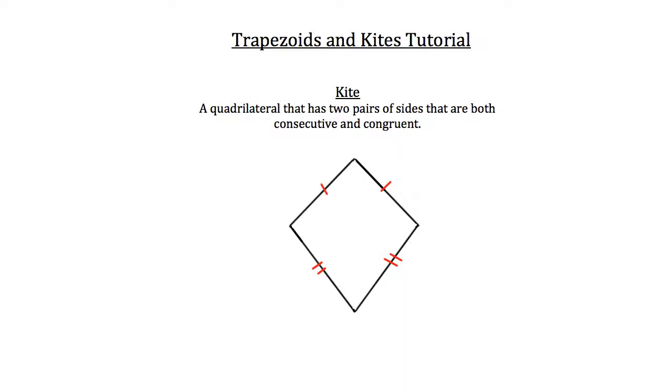So a couple things that you should know about kites is that first, their diagonals intersect each other perpendicularly. And also, opposite angles of a kite are congruent to each other. And you can see that with the red angles and the blue angles. The red angles are congruent to each other, and the blue interior angles are congruent to each other.